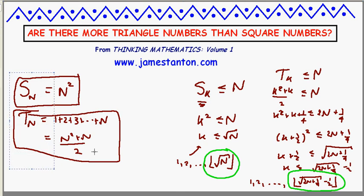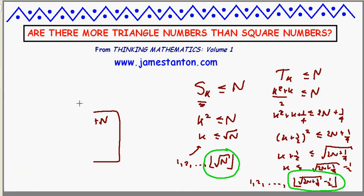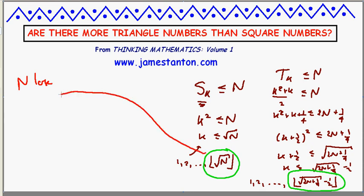Now let's compare these two formulas. Let me give myself a little more space and do this in bright bold red. If n is really large — like hundreds of thousands or millions — the number of squares less than or equal to n: when I round the square root of n down to an integer, I'm just taking off some fractional part, so it's basically root n for large n.